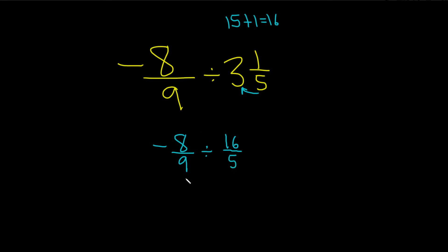Okay, now we're going to do the division. So division is the same thing as multiplication by the reciprocal. So we keep this number here, negative 8 over 9.